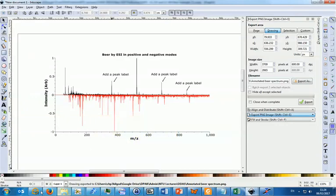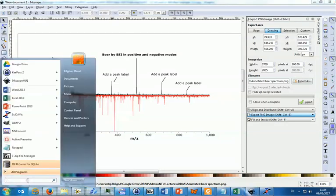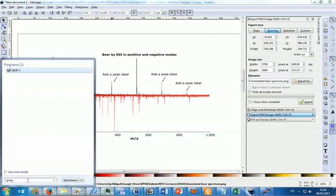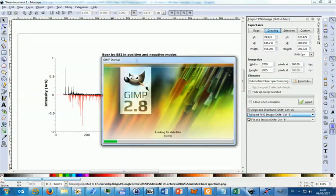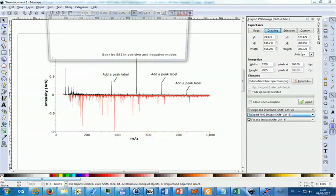The next step then is to open GIMP. Once GIMP eventually opens, open up the PNG image file you just saved from Inkscape.